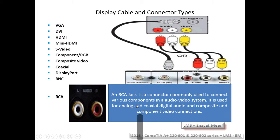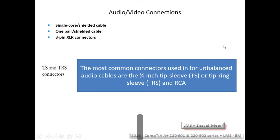The RCA jack is a connector commonly used to connect various components in an audio/video system. It is used for analog and coaxial digital audio, and for composite and component video connections. You might find RCA jacks on the back of your PC or even your TV. Audio/video connections use a single-core shielded cable or one-pair shielded cable.